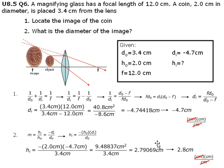The image of the coin is 4.7 centimeters behind the convex lens and its diameter is 2.8 centimeters.